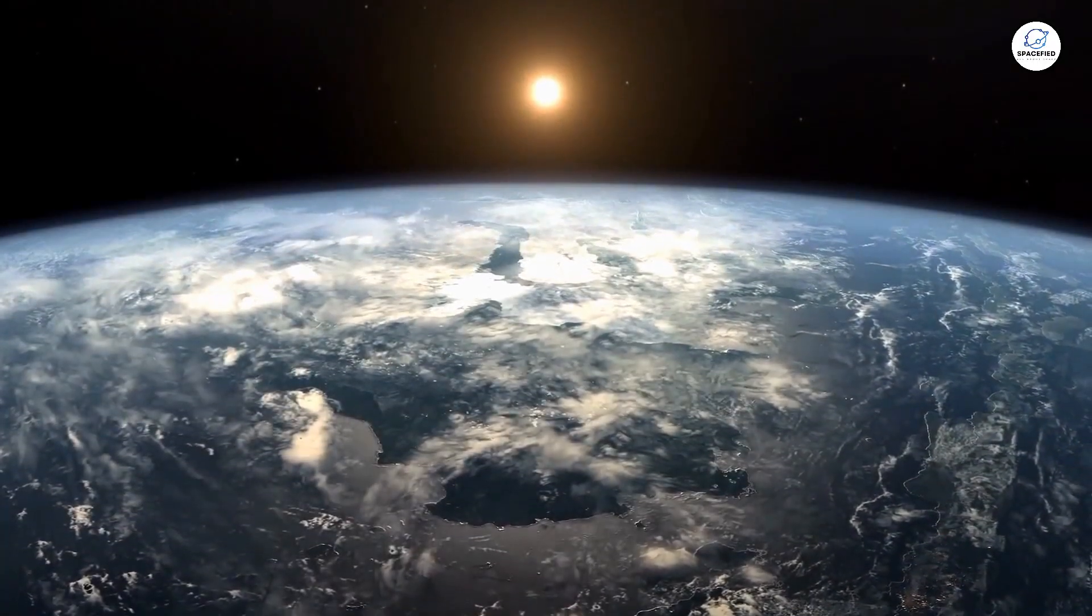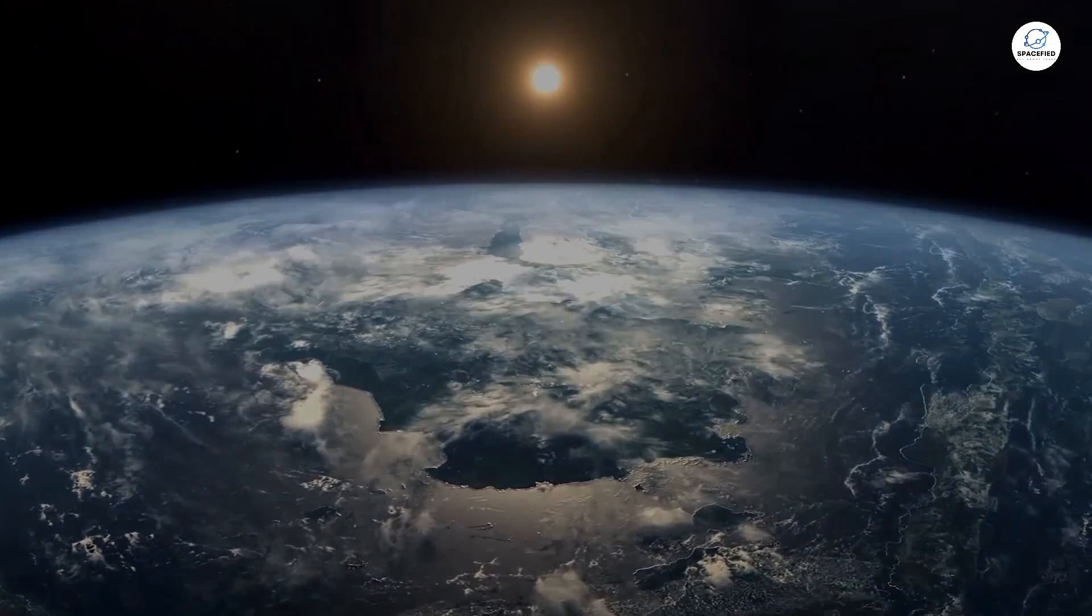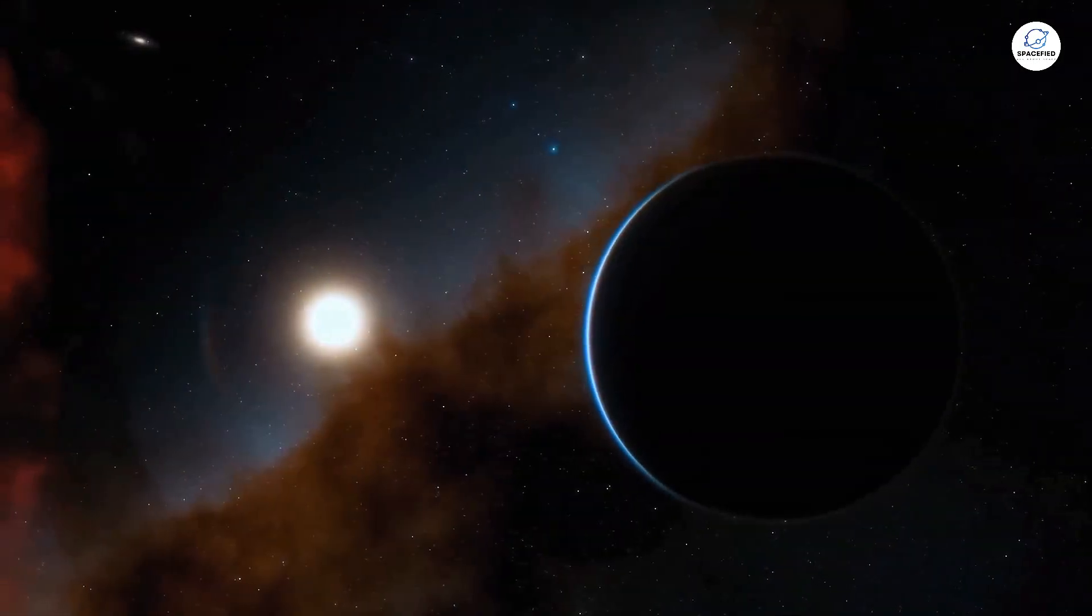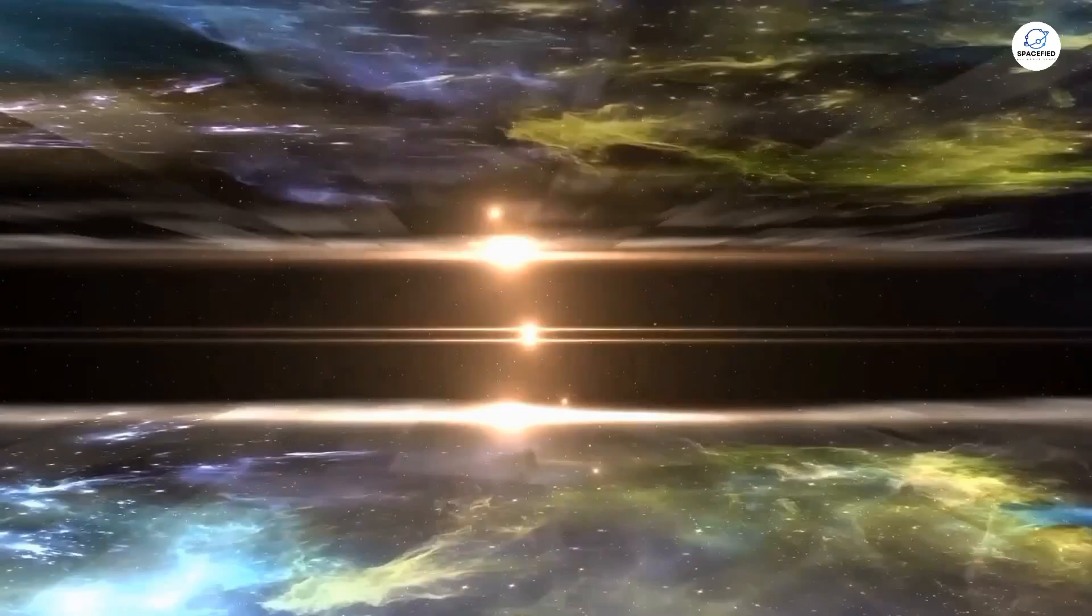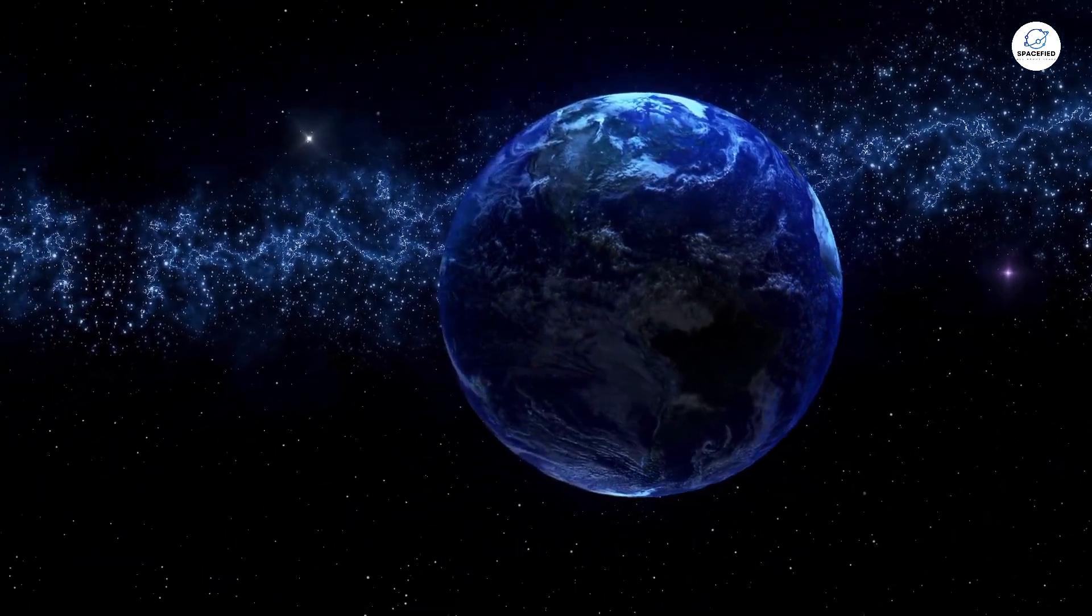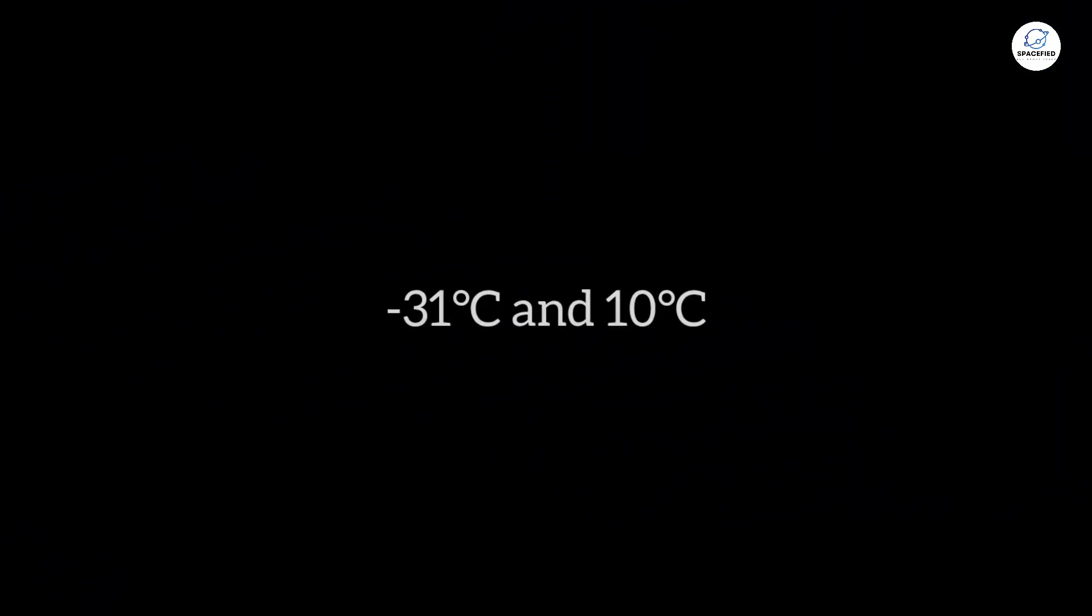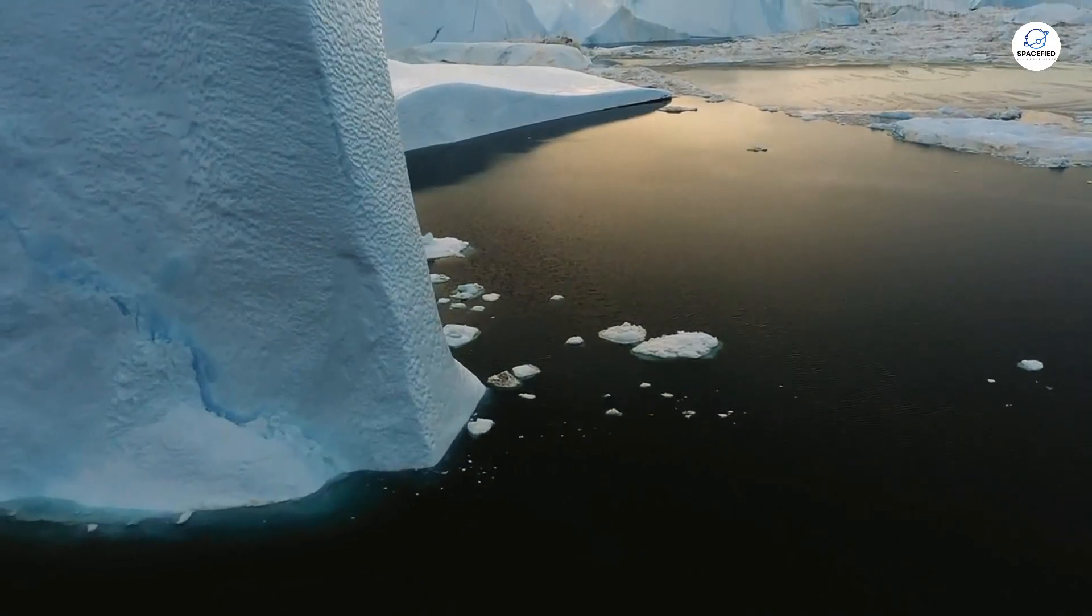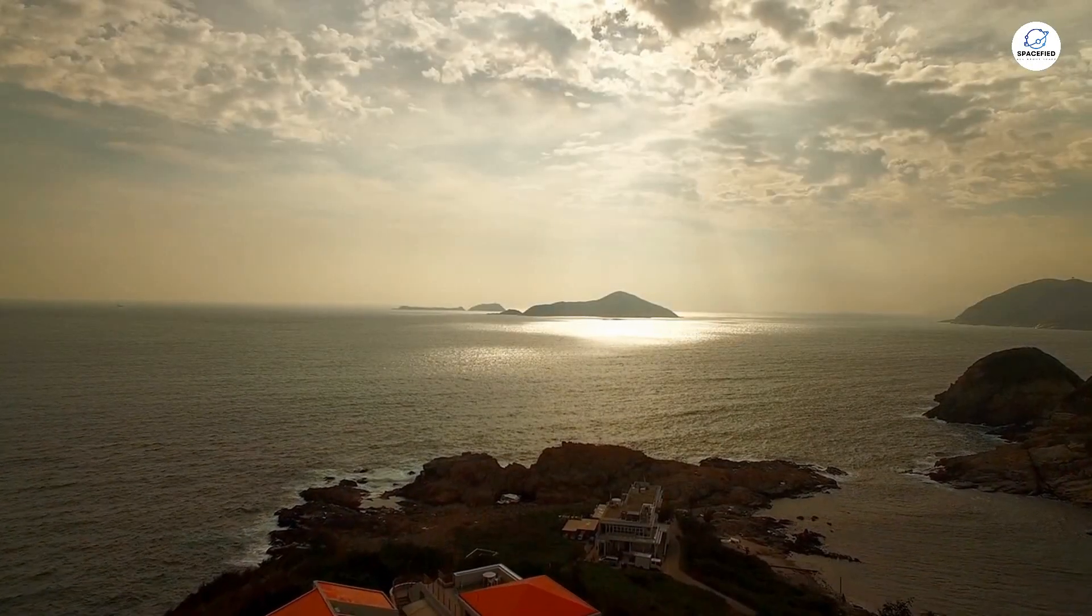Gliese 581g orbits its parent star in just 37 days. But because its star is much cooler and dimmer than our sun, this doesn't mean it's scorching hot. In fact, the temperatures on Gliese 581g are estimated to range between minus 31 degrees Celsius and 10 degrees Celsius, conditions that could support liquid water. And where there's water, there could be life.